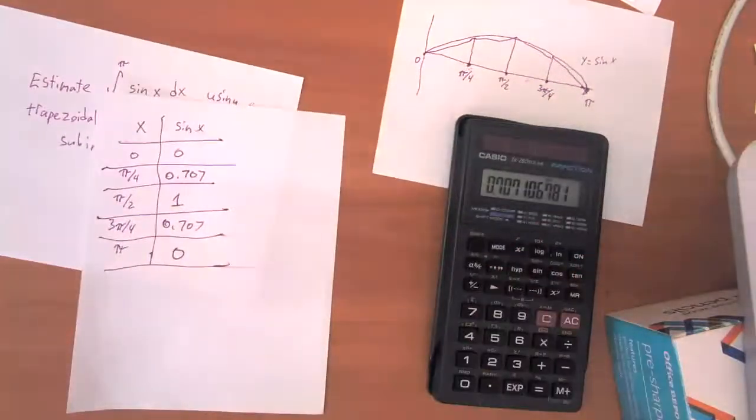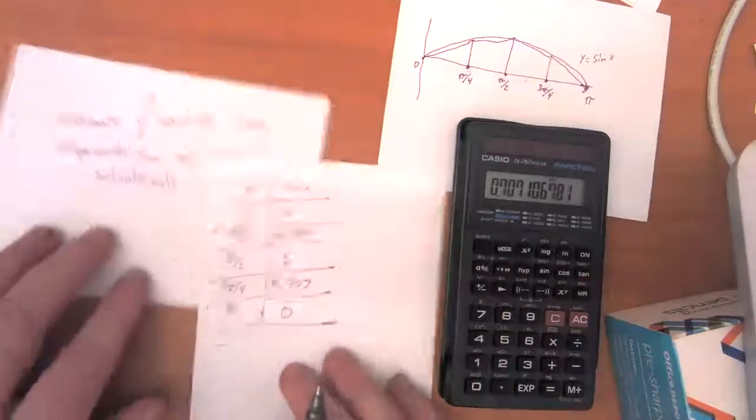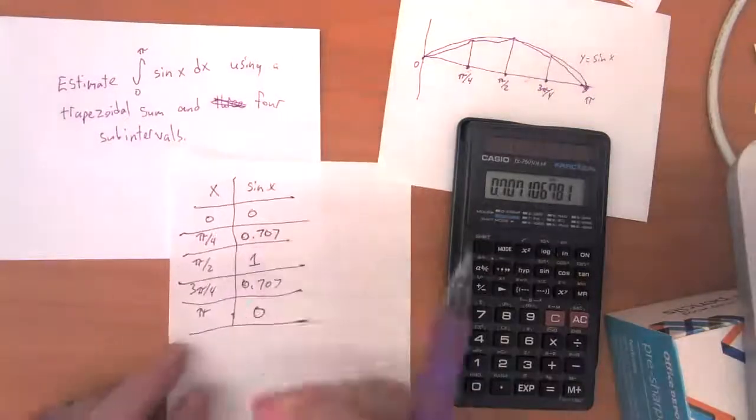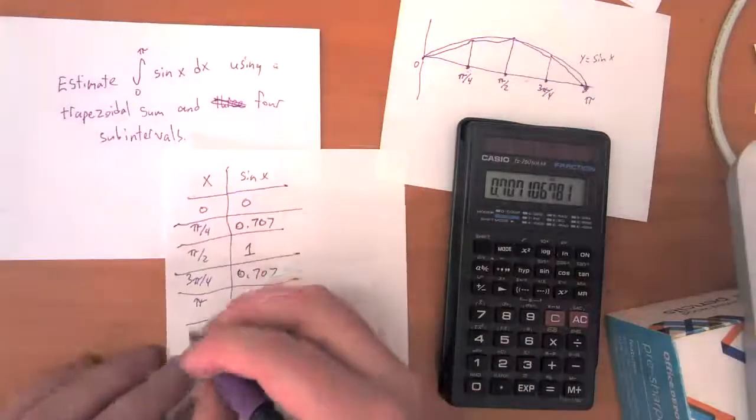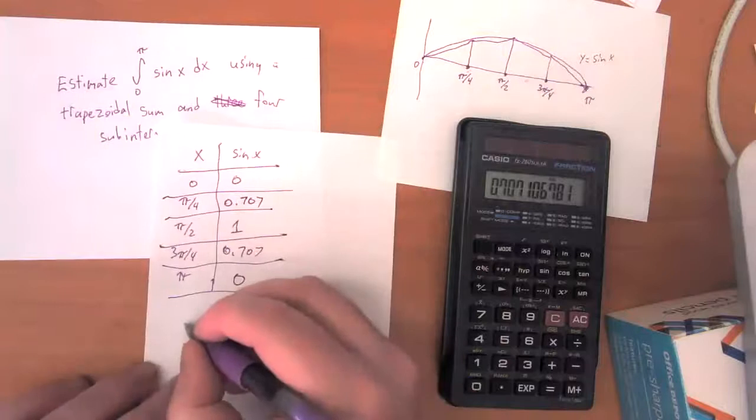So now that I've got that, I can estimate my answer. So this is going to be the same thing that we've done before. I'm going to estimate using a trapezoidal sum. And so the area of - actually if I wanted to think of it, I could.